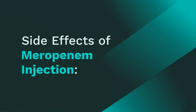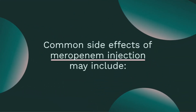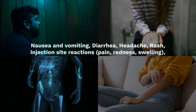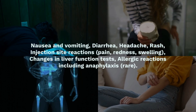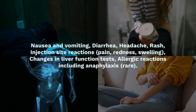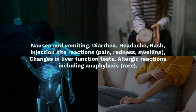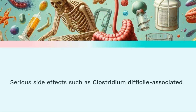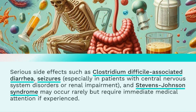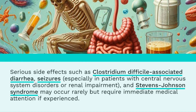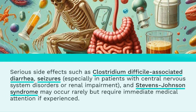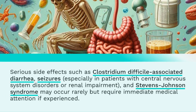Side Effects of Meropenem Injection. Common side effects of meropenem injection may include nausea and vomiting, diarrhea, headache, rash, injection site reactions, changes in liver function tests, and allergic reactions including anaphylaxis. Serious side effects such as Clostridium difficile-associated diarrhea, seizures, and Stevens-Johnson syndrome may occur rarely but require immediate medical attention if experienced.